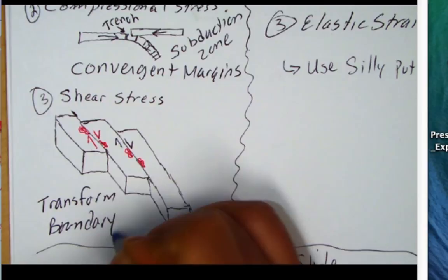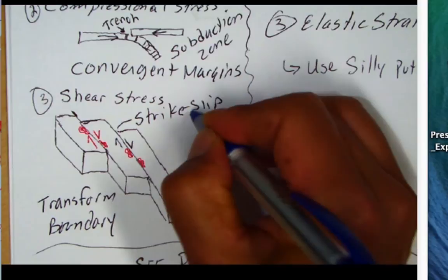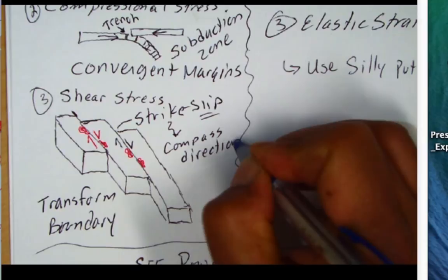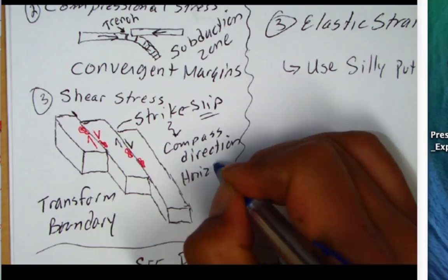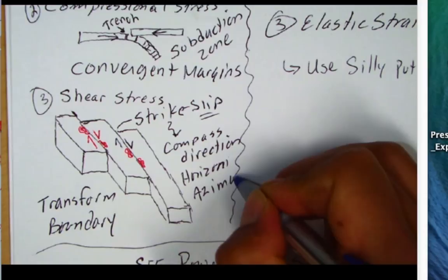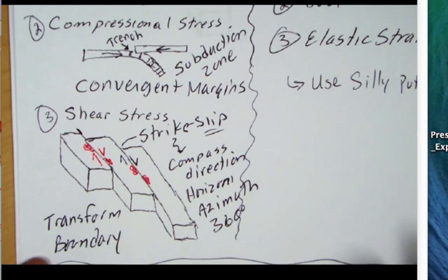The types of faults we see at transform boundaries are called strike-slip faults, because they slip in the strike direction. Think of strike as a compass direction — it's a horizontal direction, also referred to as the azimuth. The azimuth is a horizon that's 360 degrees around. You can see that these stresses are related to specific tectonic boundaries: divergent, convergent, and transform.